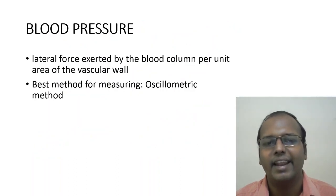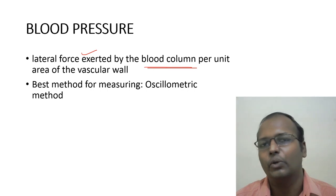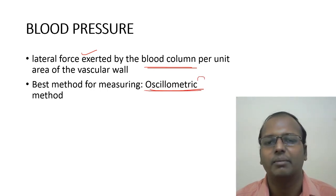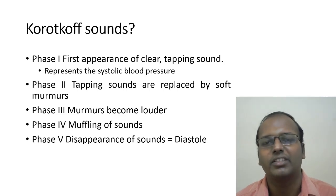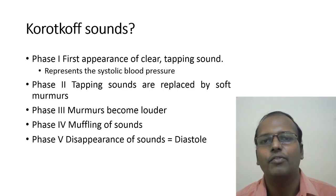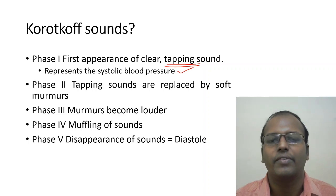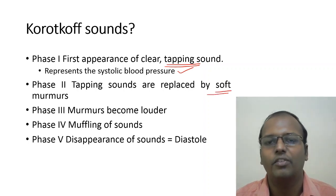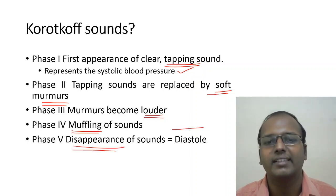Blood pressure is the lateral force exerted by the blood column per unit area of the vascular wall. The best method of measurement is the oscillometric method. Korotkoff sounds have five phases: Phase 1 — first appearance of clear tapping sound (systolic BP); Phase 2 — tapping replaced by soft murmurs; Phase 3 — murmurs become louder; Phase 4 — muffling; Phase 5 — disappearance (diastolic BP).